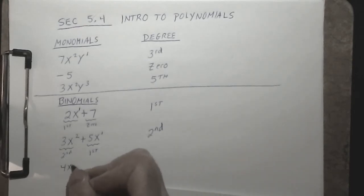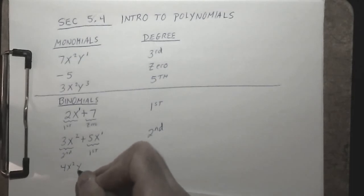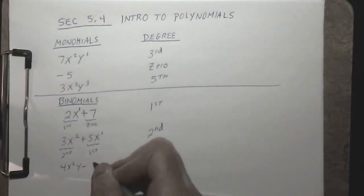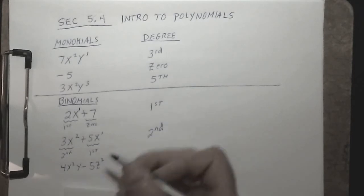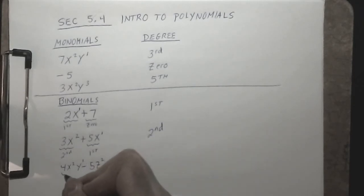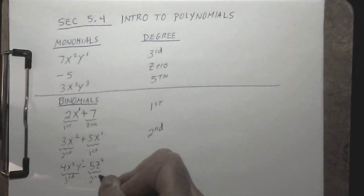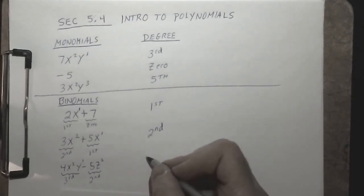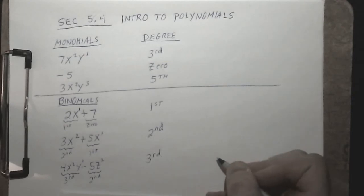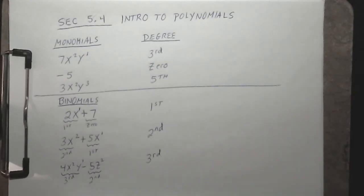One more binomial example: 4x²y − 5z². The first term in this binomial is of degree 3, the second term is of degree 2, so the degree of this entire binomial would be a third-degree binomial. Those are some examples of binomials.